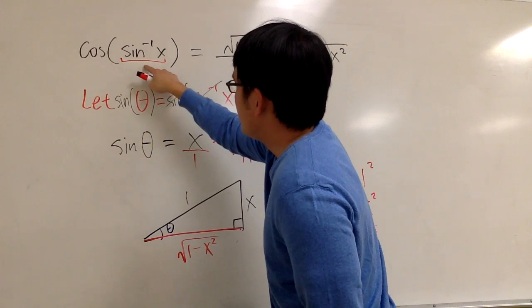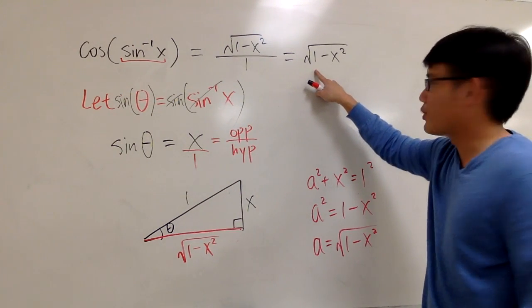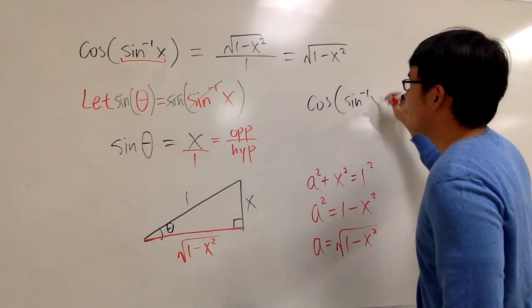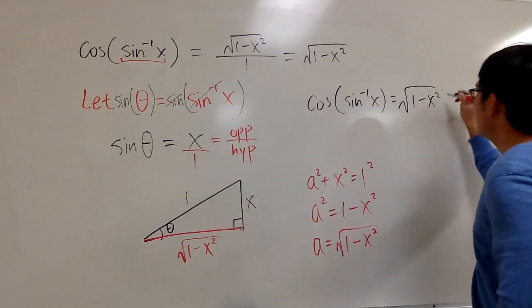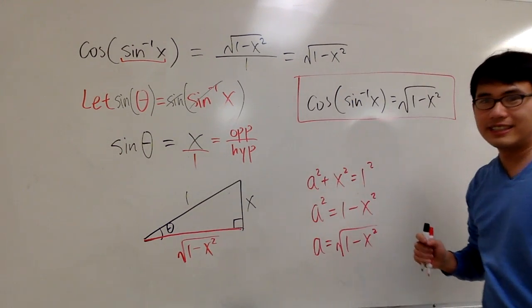So in other words, cosine of inverse sine x equals square root of 1 minus x squared. And perhaps I will just put this down right here, so we can be more formal. This equals square root of 1 minus x squared. And I have to box my answer. As usual. That's it.